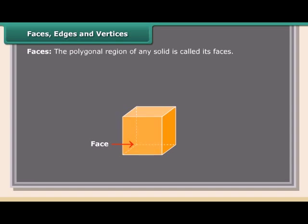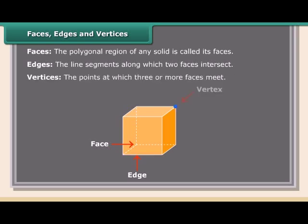Faces, edges, and vertices: The polygonal region of any solid is called its face. Edges are the line segments along which two faces intersect. Vertices are the points at which three or more faces meet.